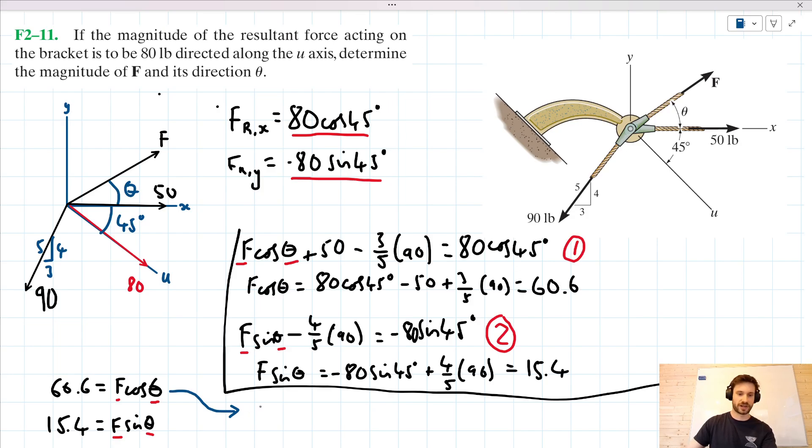So let's rearrange this equation here. Let's express F in terms of theta. So we can say F is equal to 60.6 over cos theta. Okay. So now we've expressed one unknown in terms of the other. We can then substitute that. We can substitute this term here in for F in our second equation. And what that will leave me with is this 15.4 is equal to 60.6 sin theta over cos theta.